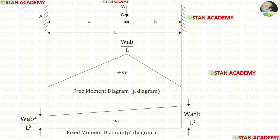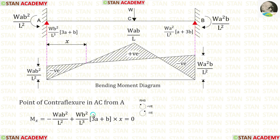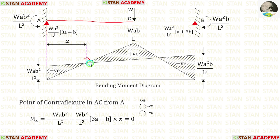Now we are going to draw the bending moment diagram. For that we combine the free moment diagram and the fixed moment diagram. Now we are going to find the points of contraflexure. The point of contraflexure is the point where the bending moment changes its sign. Here there are two such points: one in the span AC and one in the span CB.